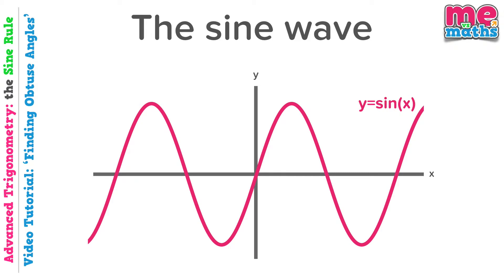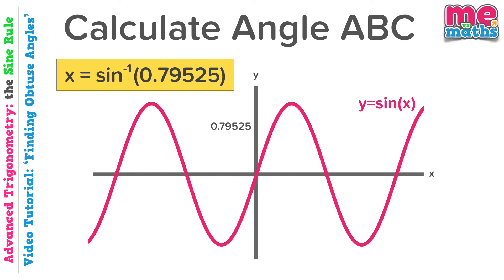In a future tutorial we'll look in much more detail at the graph of the sine function or as it's sometimes called the sine wave because surprise surprise it's shaped like a wave. At the end of the example we were just looking at we got to this point. We knew X was equal to inverse sine of 0.79525 or thought of another way sine X is equal to 0.79525.